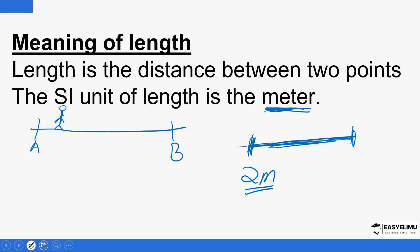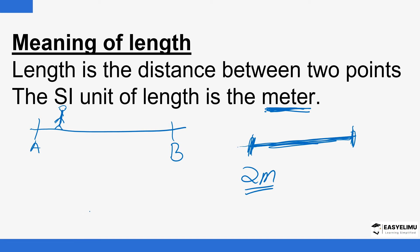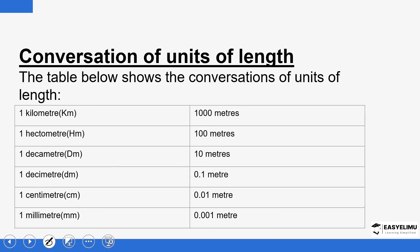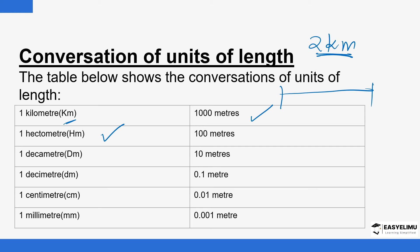We have other units of measuring length and we want to see how you can convert from meters to other units. We have the kilometer, which can also be used to measure length. A kilometer has a thousand meters in it. There is also the hectometer. You can write 2 km — in math, this is interpreted as two kilometers. It's important to take note of the symbols used for these units.